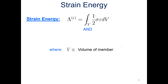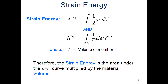Strain energy, at least for the material problems we're looking at, is one half the stress multiplied by the strain, integrated over the entire volume. Using Hooke's Law, we substitute in for the stress — modulus times the strain — so we get the modulus times the strain squared for our strain energy. Effectively, the strain energy is the area under the stress-strain curve multiplied by the material volume.